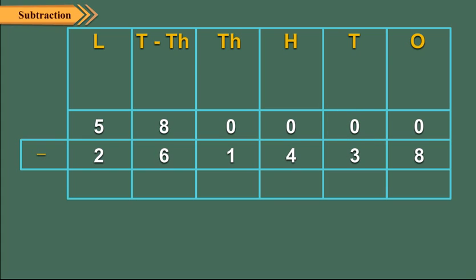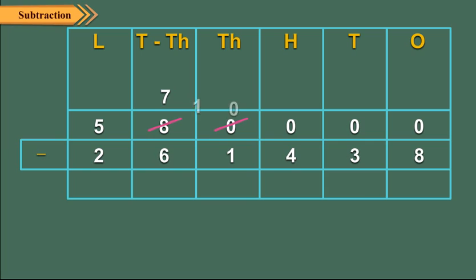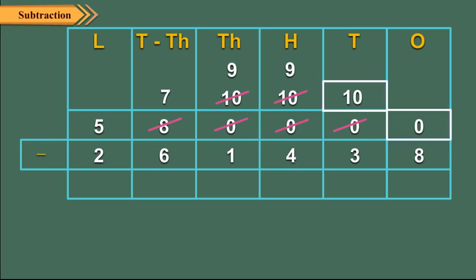But the tens digit is also 0, so we move to the hundreds digit, which is also 0. Then we move to the thousands digit, which is also 0. So we move to the ten thousands digit, which is 8. Now 8 ten thousands and 0 thousands equals 7 ten thousands and 10 thousands. Then regroup: 10 thousands and 0 hundreds as 9 thousands and 10 hundreds. Next regroup: 10 hundreds and 0 tens as 9 hundreds and 10 tens. Finally regroup: 10 tens and 0 ones as 9 tens and 10 ones.